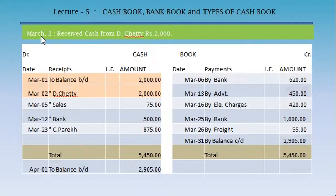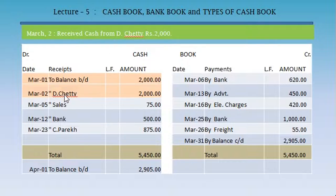Second transaction, March 2: received cash from D. Chetty Rs. 2,000. To record this transaction in the cash book on the debit side — as we have received cash — date March 2, to D. Chetty, Rs. 2,000.